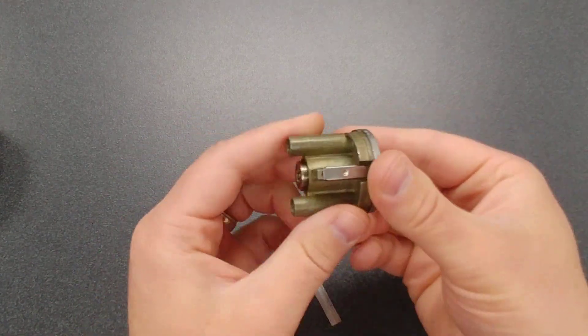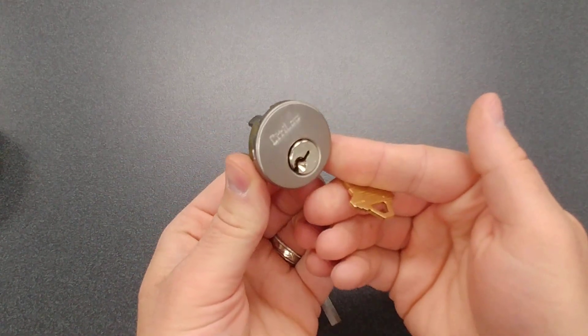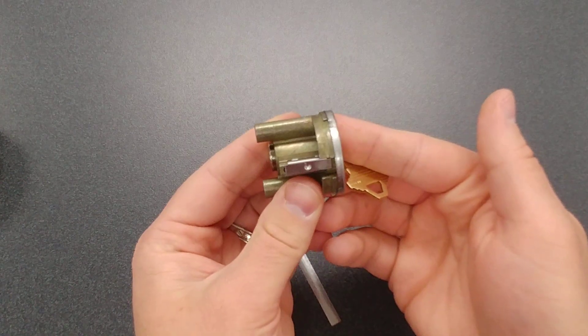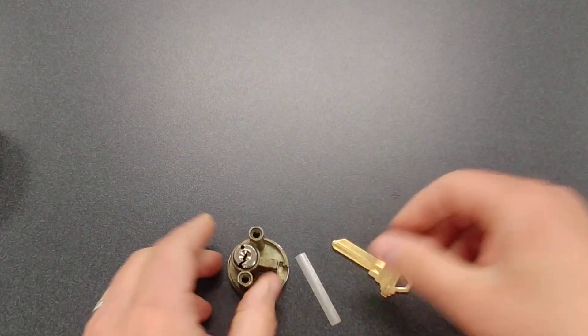I'm going to remove the shim. At this point, you're able to take it apart and rekey it. So that's how you shim a lock. Thanks for watching. We'll see you next time.